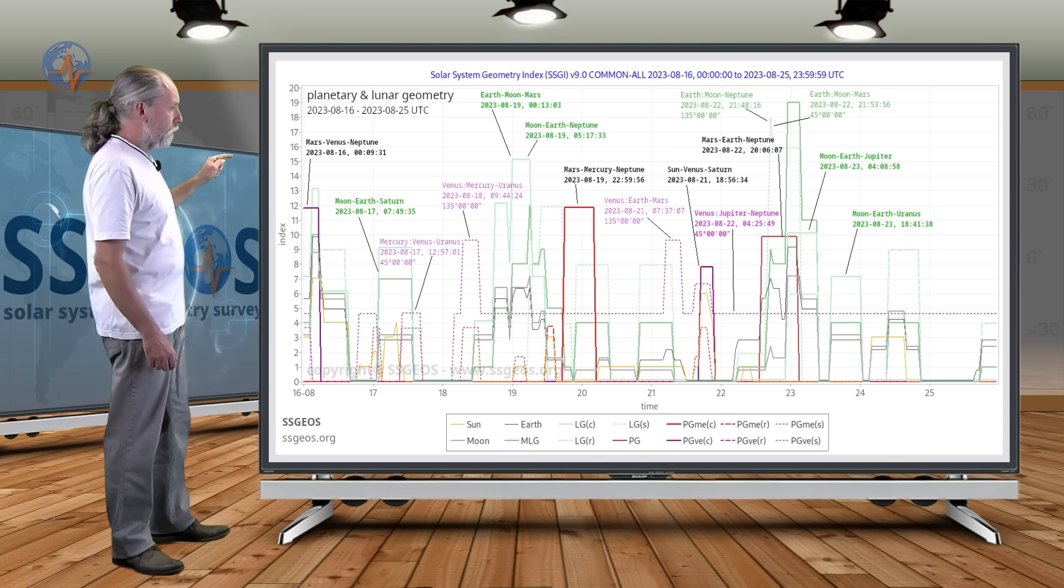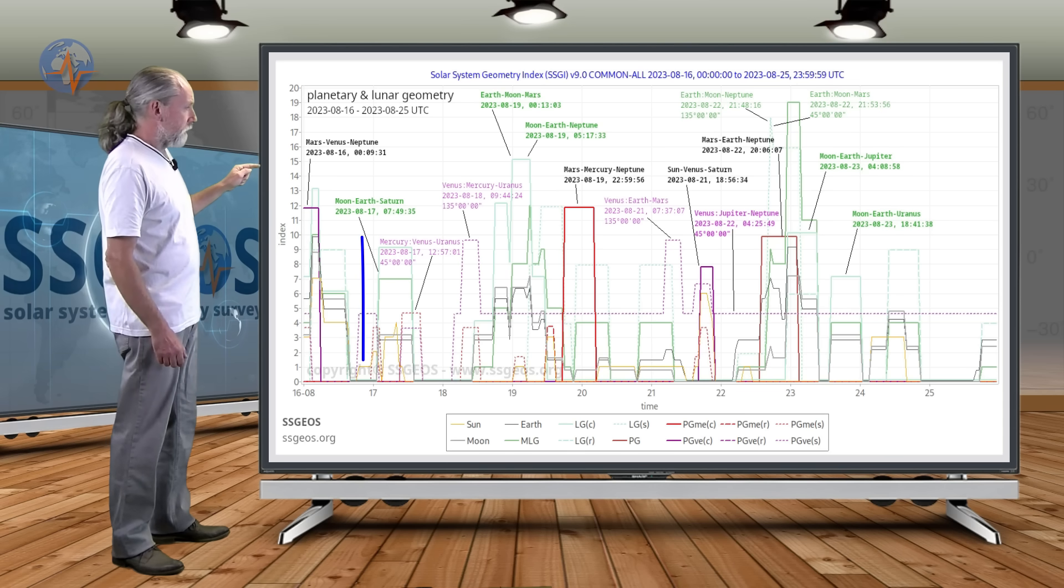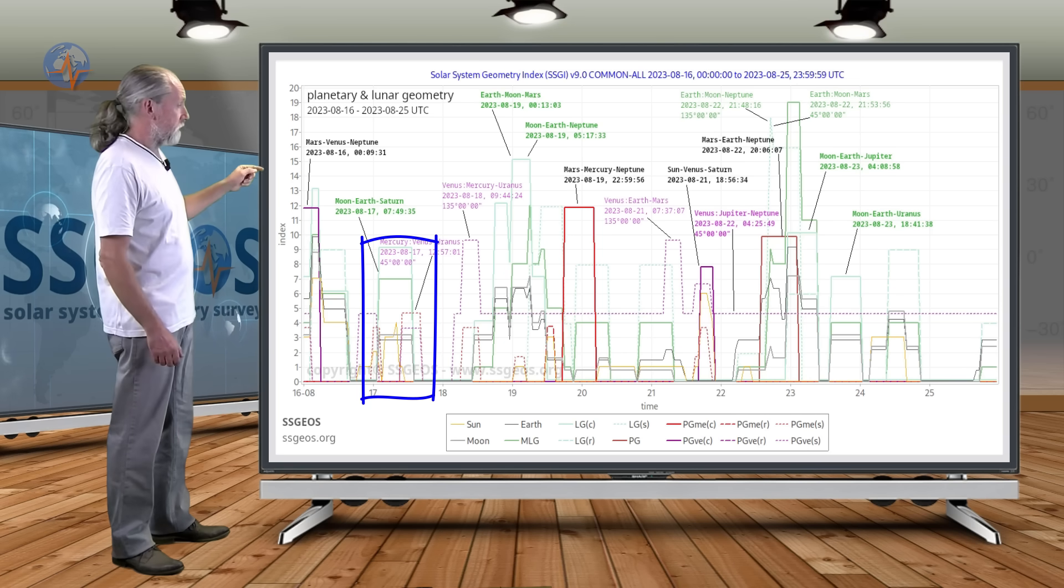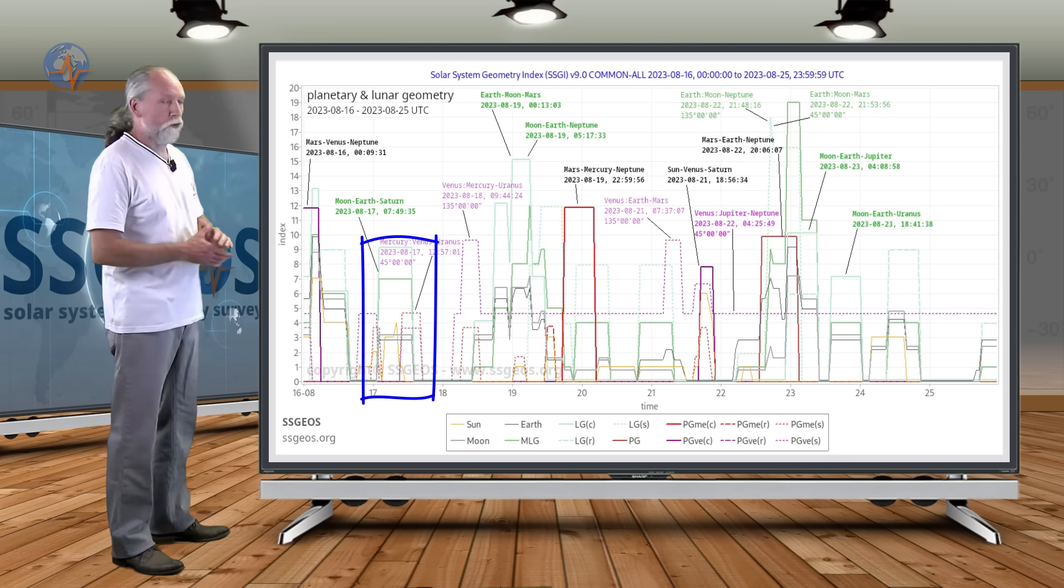We have lunar geometry this morning actually. This is on the 17th at 7:49 UTC. And that is when the Moon is in conjunction with Saturn.